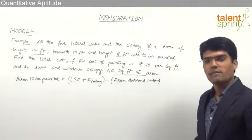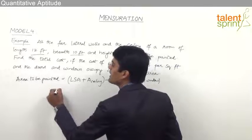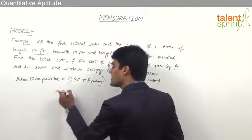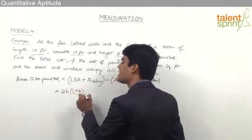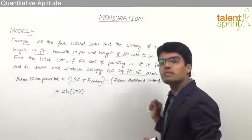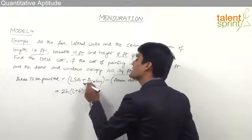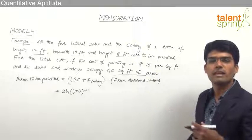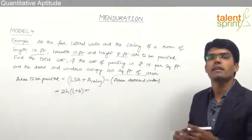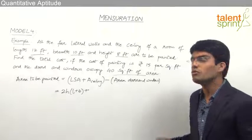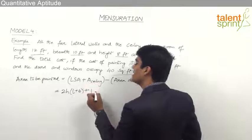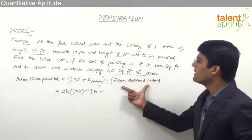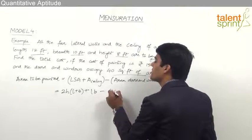Using the relevant formulae, the total area to be painted equals the lateral surface area of a cuboid, which is 2H(L+B), that is 2HL + 2HB, plus the area of the ceiling. The area of the ceiling equals the area of the floor, which is length × breadth = LB, because both ceiling and floor areas are equal in a cuboid. Then we subtract the area of doors and windows, which is given as 40 square feet.